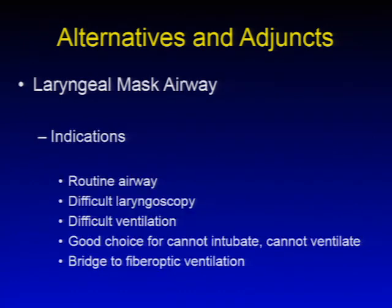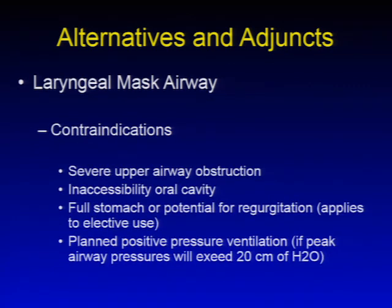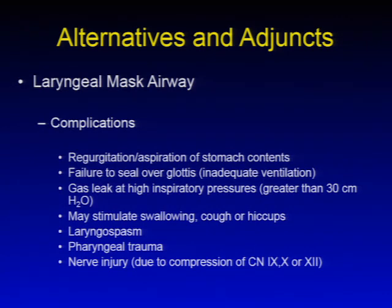Indications for LMAs include routine airways, difficult laryngoscopy, difficult ventilation, cannot intubate/cannot ventilate scenario, and as a bridge to fiber optic intubation. Contraindications include severe upper airway obstruction, inaccessibility of the oral cavity, full stomach or regurgitation risk, and planned positive pressure ventilation with peak airway pressures exceeding 20 cmH2O. Complications include regurgitation or aspiration, failure to seal over the glottis causing inadequate ventilation, gas leak at high inspiratory pressures greater than 30 cmH2O, stimulation of swallowing, cough, hiccups, laryngospasm, pharyngeal trauma, or nerve injury due to compression of cranial nerves 9, 10, or 12.